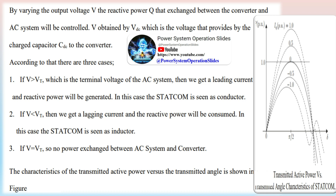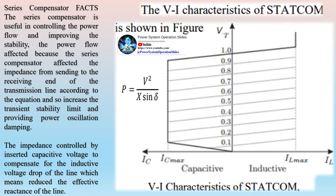The static VAR compensator (SVC), as defined by IEEE 1031 and 1534, is a shunt connected static VAR generator or absorber whose output is adjusted to exchange capacitive or inductive current to maintain or control specific parameters of the electrical power system, typically bus voltage. SVC is used to regulate and control line voltage by switching an inductor or a capacitor in shunt with the network. It is a combination of thyristor controlled reactor (TCR), thyristor switched capacitor (TSC), and a harmonic filter. SVC is widely used due to its cost effectiveness and is considered the first generation of FACTS devices.